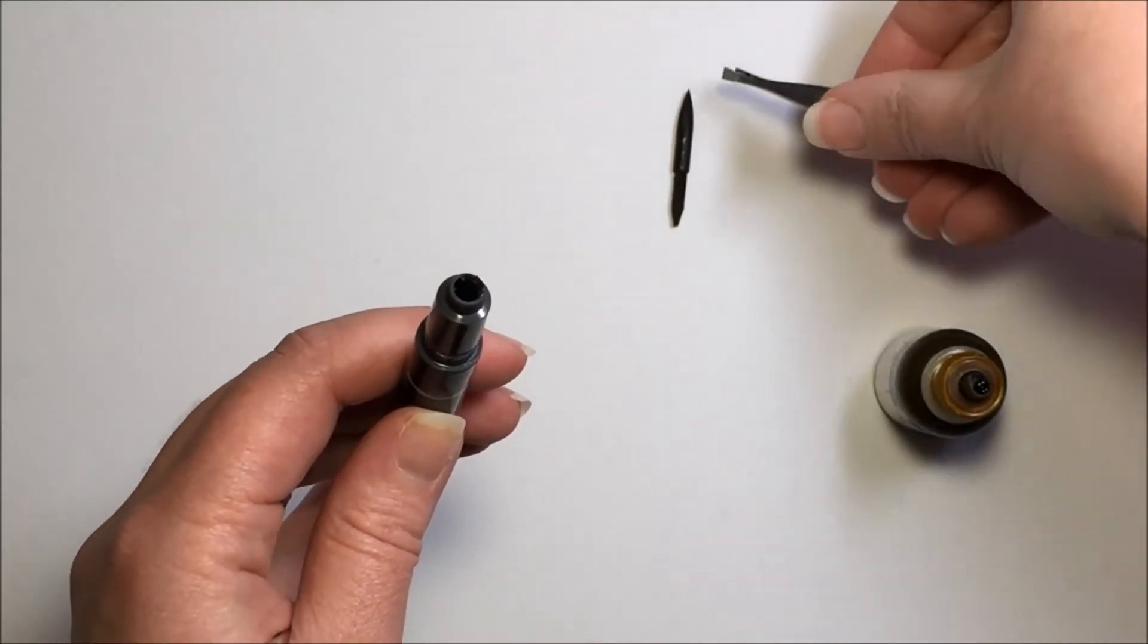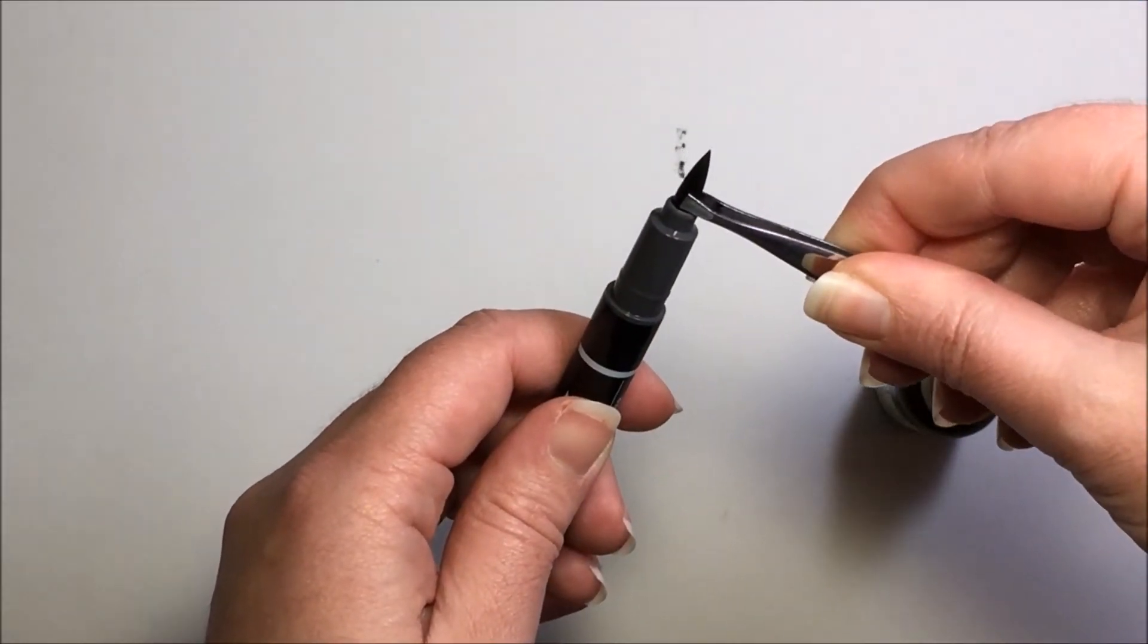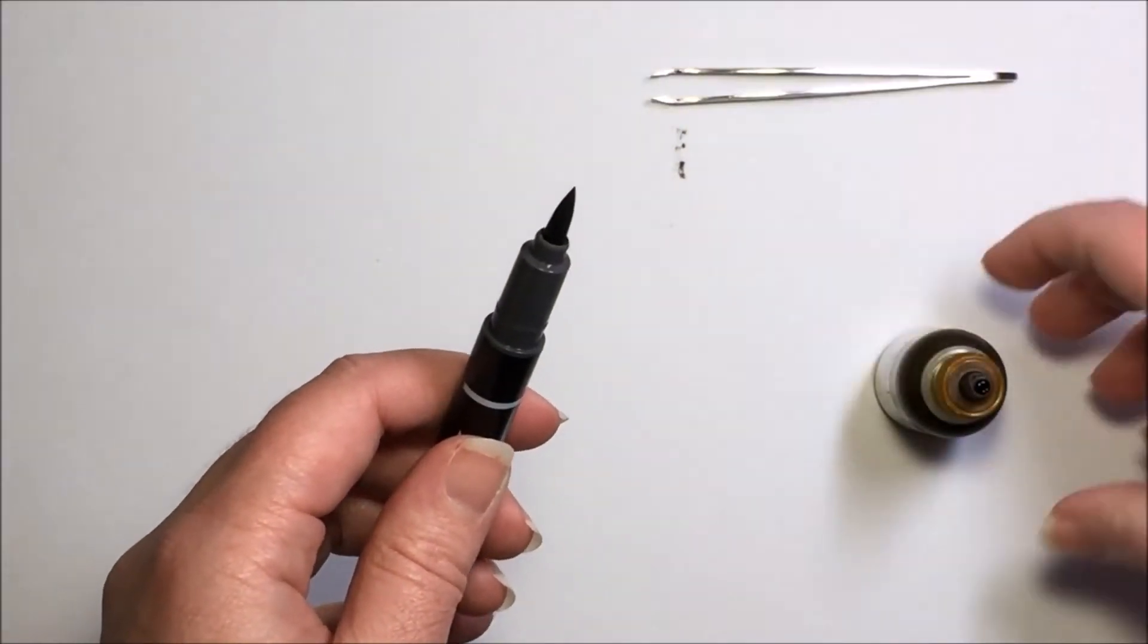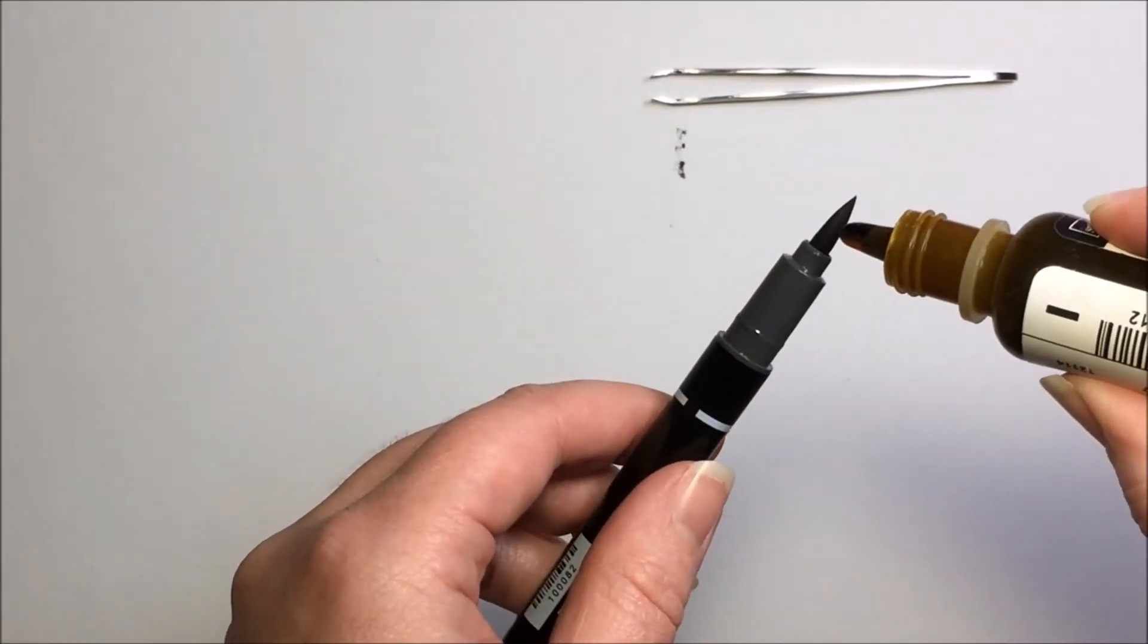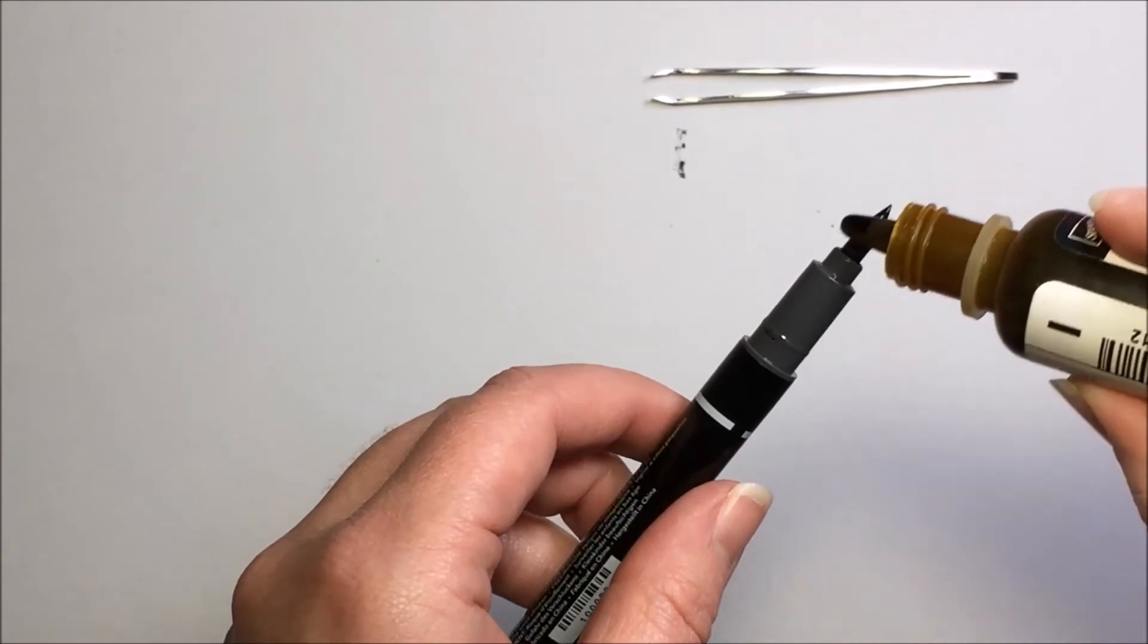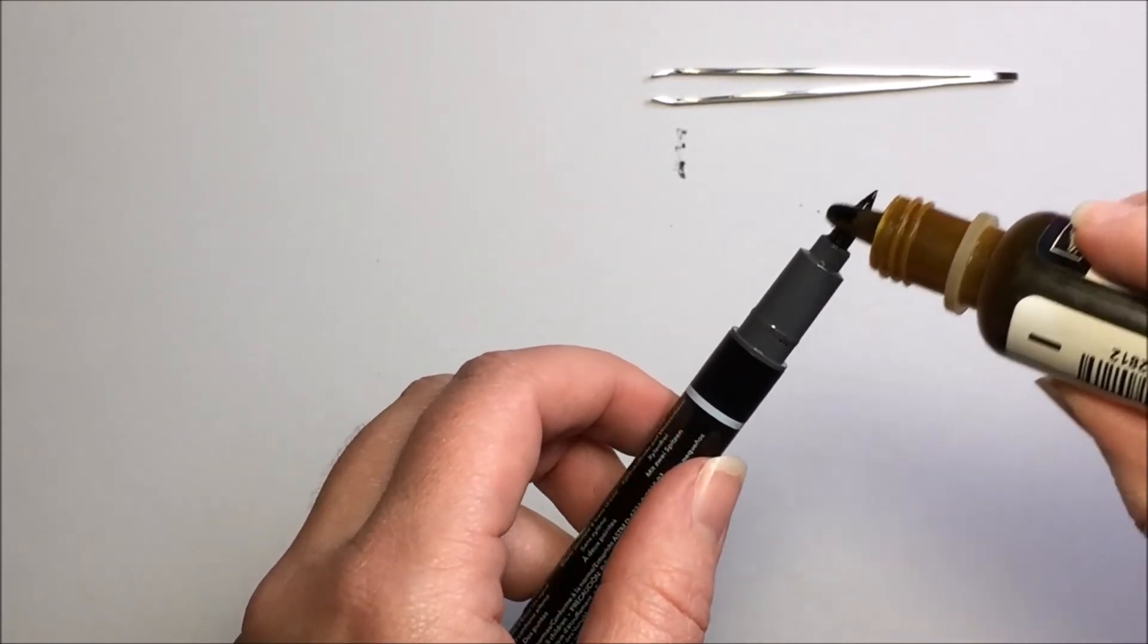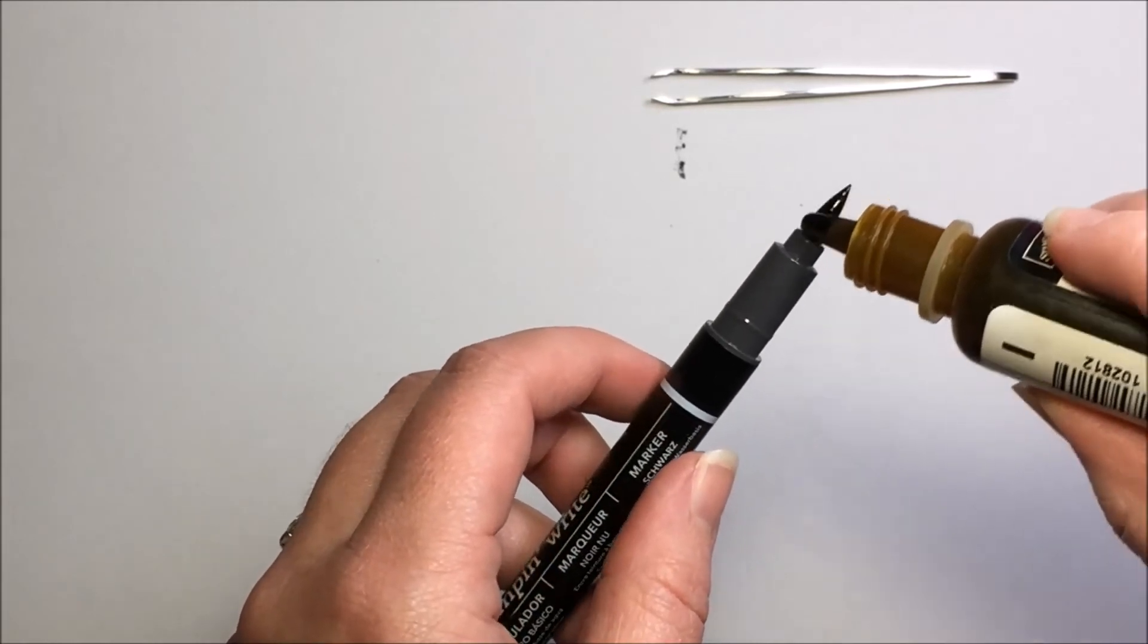Once you have put your drops in the marker you can put your nib back in the tip and then I also like to do one drop on the marker itself and then once I have that one drop I'll just kind of rub it in with the tip of my re-inker.